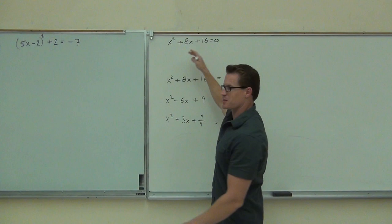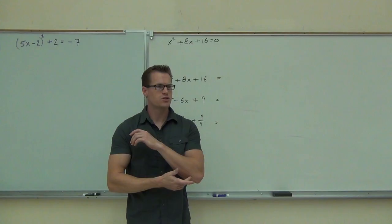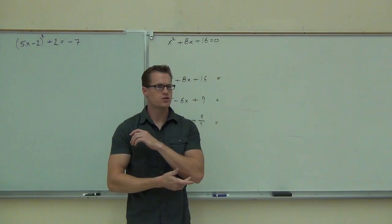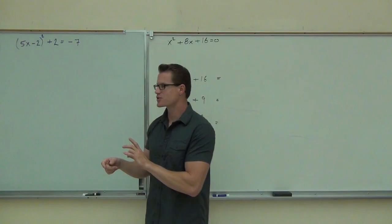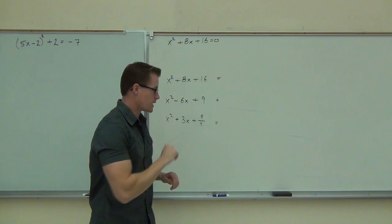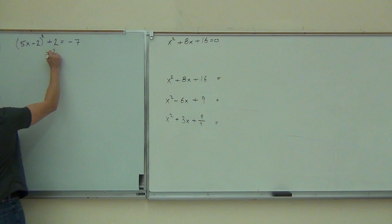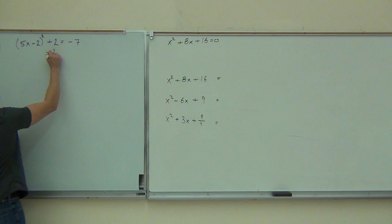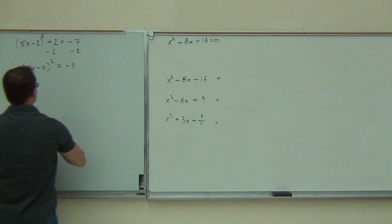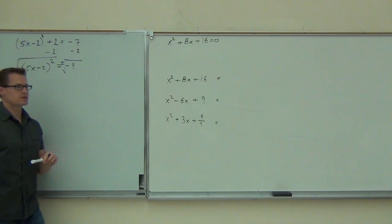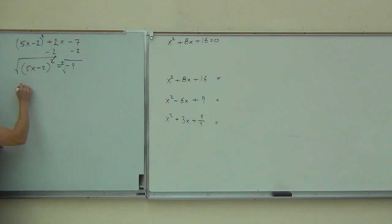We're solving the next problem. First step: true or false, first step is to take the square root of both sides? No — first you subtract 2 to isolate the squared expression. We need something squared by itself. We can't just take the square root because that fails — it allows nothing useful. So we get 5x minus 2 squared equals negative 9.